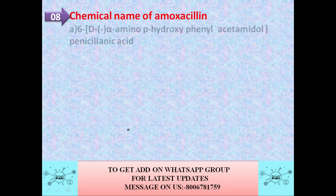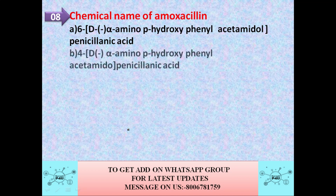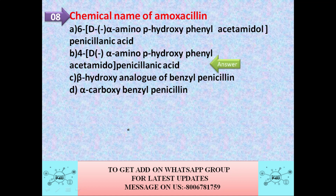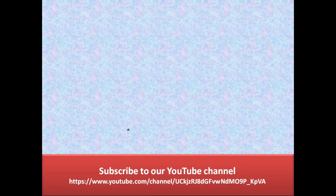The next question: the chemical name of amoxicillin — option A is 6-D-alpha-amino-p-hydroxyphenyl acetamido penicillinic acid, option B is 4-D-alpha-amino-para-hydroxyphenyl acetamido penicillinic acid, option C is beta-hydroxy analog of benzyl penicillin. The correct answer is option B: 4-D-alpha-amino-para-hydroxyphenyl acetamido penicillinic acid.